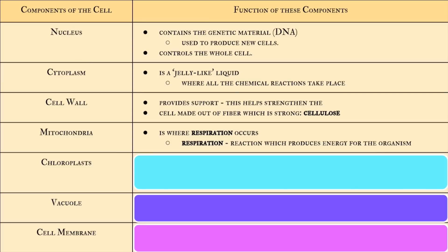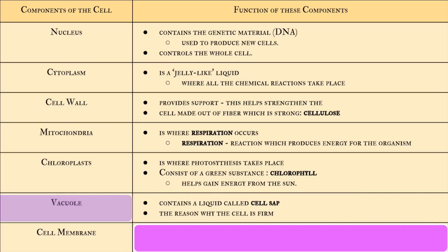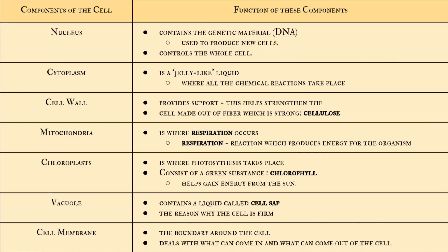Next, the chloroplast is where photosynthesis takes place. Chloroplasts contain a green substance called chlorophyll, which helps the cell gain energy from the sun. The vacuole contains a liquid called cell sap, and this watery liquid is the reason why the cell is firm. Lastly, the cell membrane is the boundary around the cell and controls what can come in and what can come out of the cell.